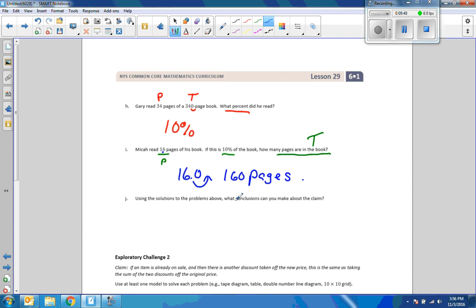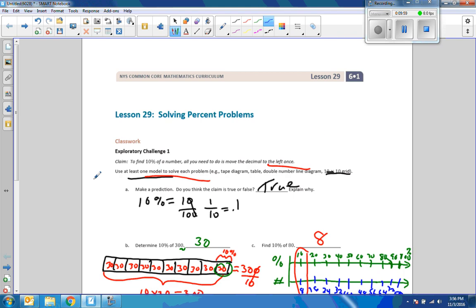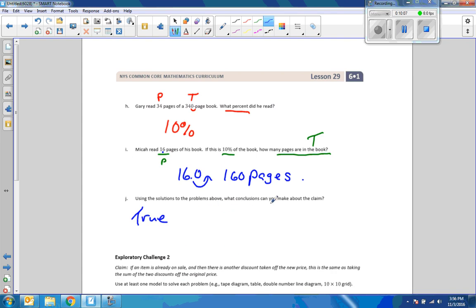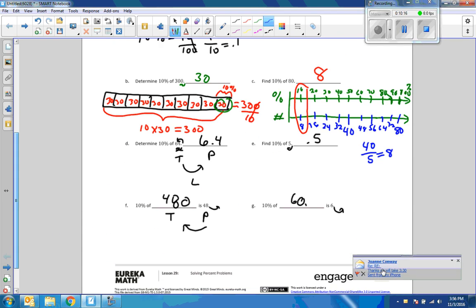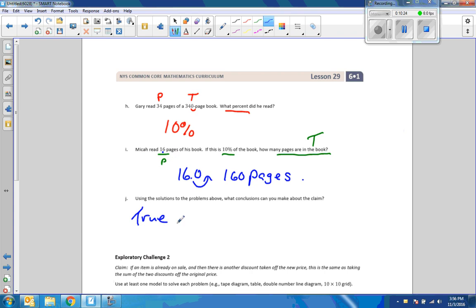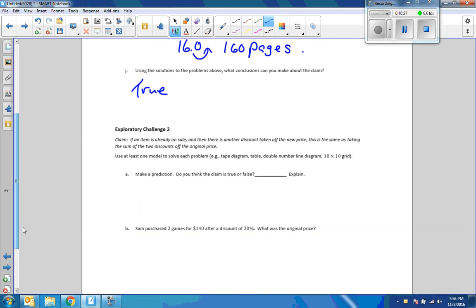Using the solutions to the problems above, what conclusion can you make about the claim? Well, I can claim that the conclusion I can make about the claim is the claim is true. And what was the claim? To find 10% of the number, all you need to do is move the decimal to the left one place. We have just done eight examples. And they all came out to be true.